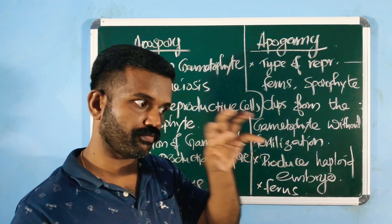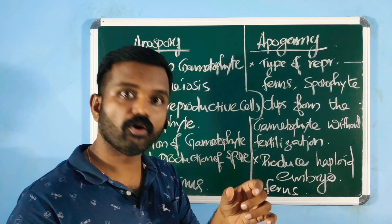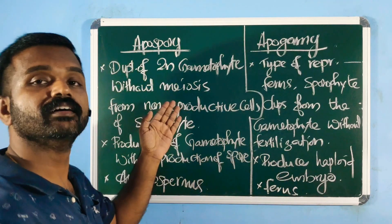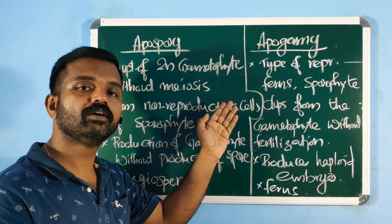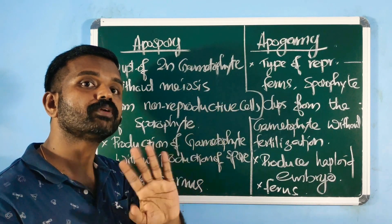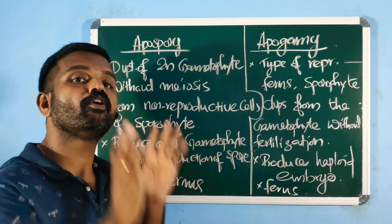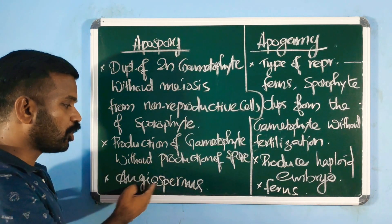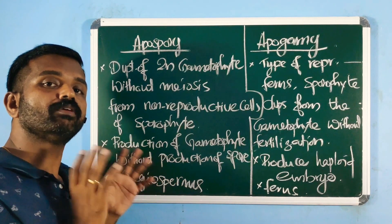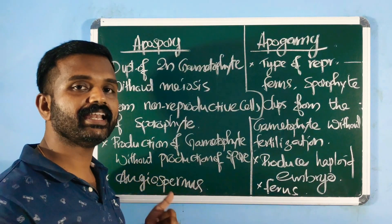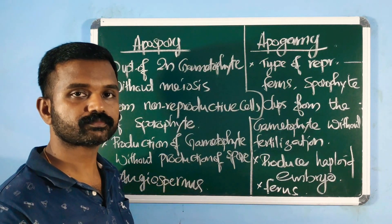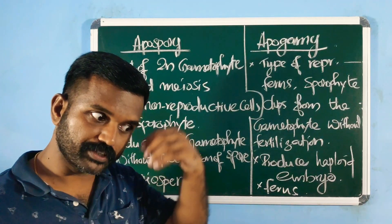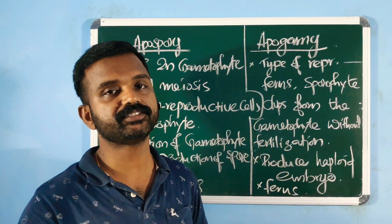Usually, a sporophyte produces a spore and that spore gives rise to a gametophyte. But in apospory, the gametophyte is produced without spore formation. This is the most common form of apomixis seen in angiosperms.